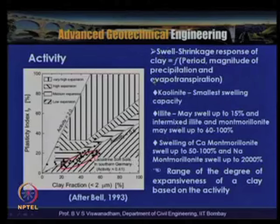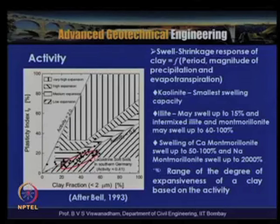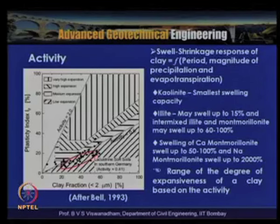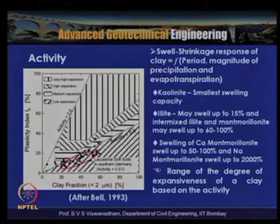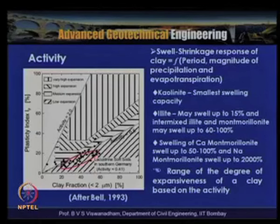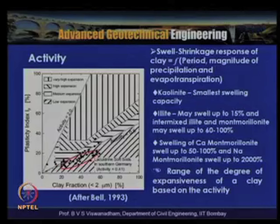The swell-shrinkage response of a clay depends upon the period and magnitude of precipitation and evapotranspiration. Kaolinite has the smallest swelling capacity; illite may swell up to 15%; intermixed illite and montmorillonite may swell up to 60–100%. Calcium montmorillonite can swell up to 50–100%, and sodium montmorillonite can swell as high as 2000%.